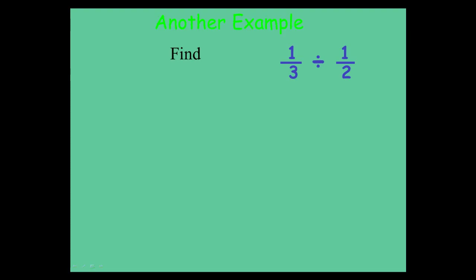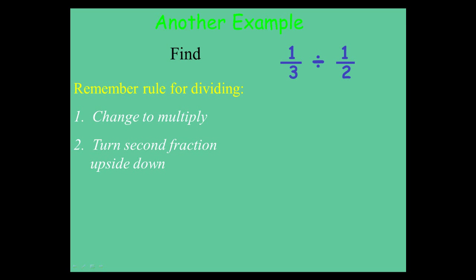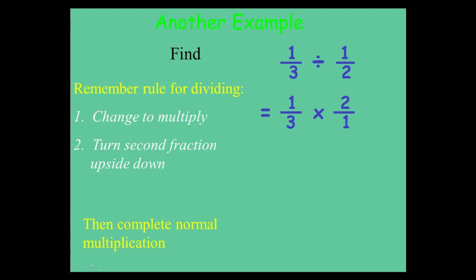Let's have a look at another example. Let's take 1 third divided by a half. Flip a half upside down and change your calculation to a multiplication. So what you're looking at is 1 third times 2 over 1. Multiply 1 times 2 on the top, 3 times 1 on the bottom, and you end up with 2 thirds. Now you always want to check and see if you can simplify your answer. In this case we can't, but always check to see if you can.